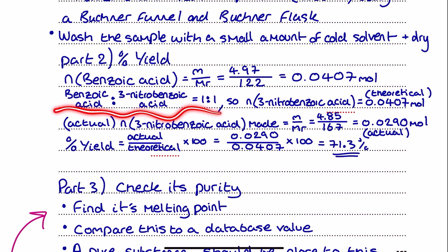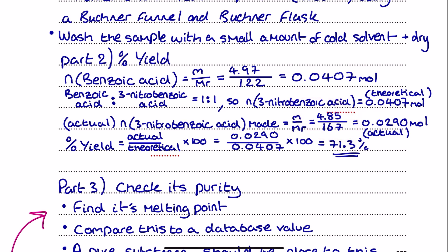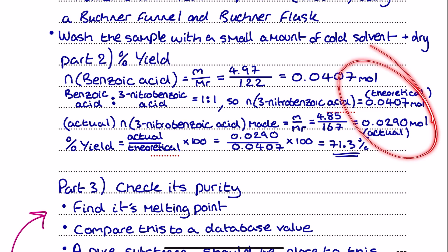There is a one-to-one ratio between the organic reactant and organic product, so the moles of 3-nitrobenzoic acid we should theoretically make are identical to the moles of benzoic acid used. The actual moles of 3-nitrobenzoic acid made is found by taking the mass actually obtained and dividing by the molar mass of the product — using 167 here — giving 0.0290 mol. That's less than the theoretical, and it should always be less. If it's ever more, you've made a mistake.